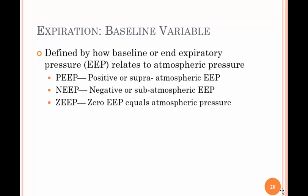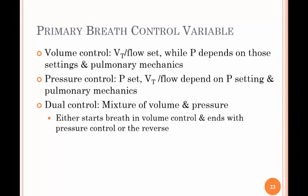The baseline variable defines how the baseline or end-expiratory pressure relates to atmospheric pressure. PEEP is positive end-expiratory pressure. NEEP is negative or subatmospheric end-expiratory pressure. And ZEEP is zero end-expiratory pressure, equal to atmospheric pressure. In volume control, the tidal volume and flow are set while the pressure is dependent on the settings and pulmonary mechanics. In pressure control, the pressure is set and the tidal volume and flow depend on the pressure setting and the pulmonary mechanics — like compliance and resistance.